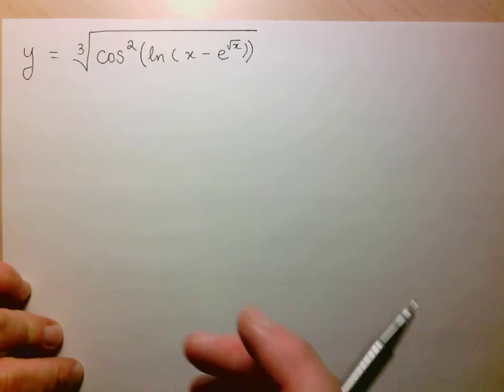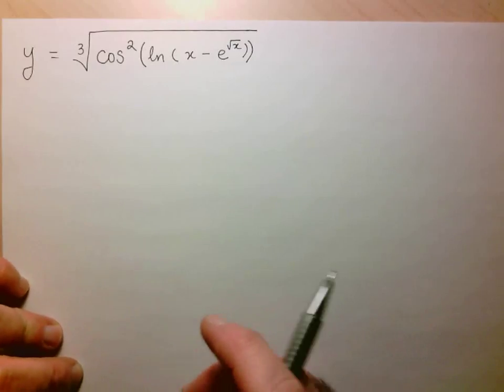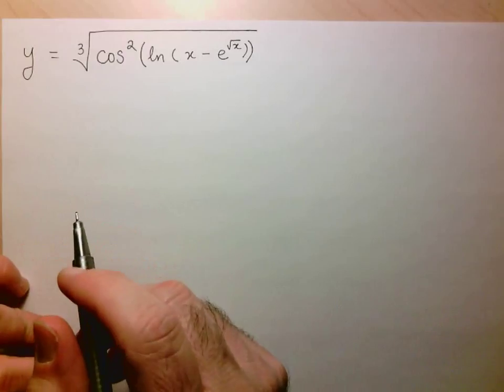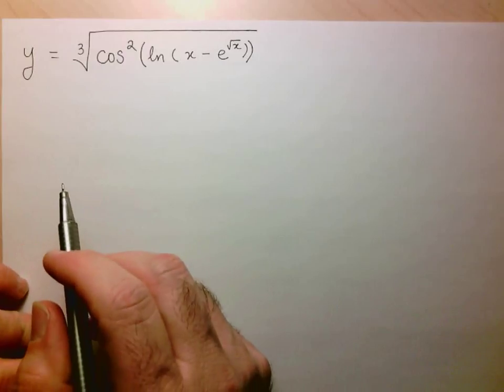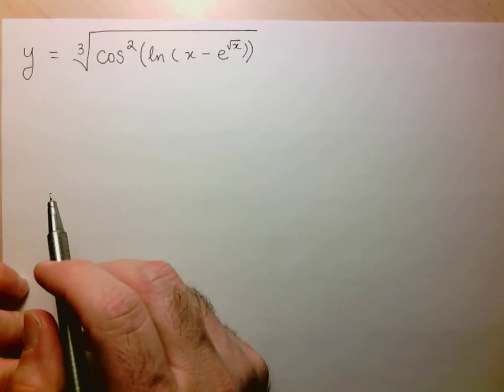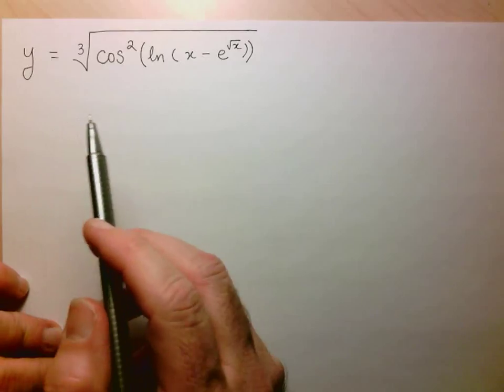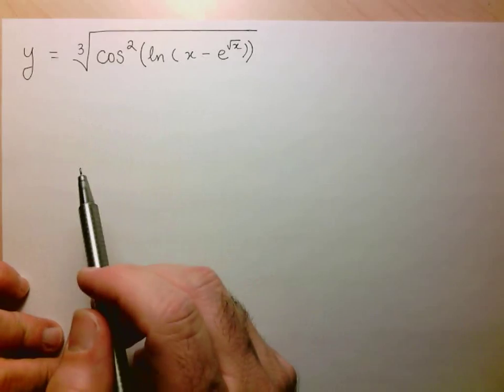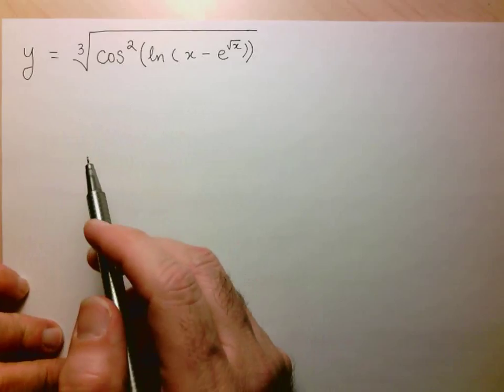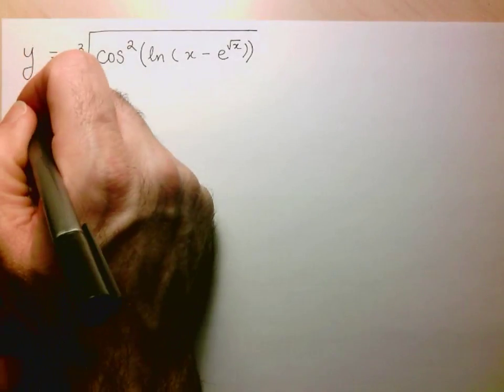The trick to dealing with these questions that might involve many uses of the chain rule is to really focus on one function at a time. Because this is a composition of a composition of who knows how many compositions, the idea is to focus on one function at a time. Let's get started.